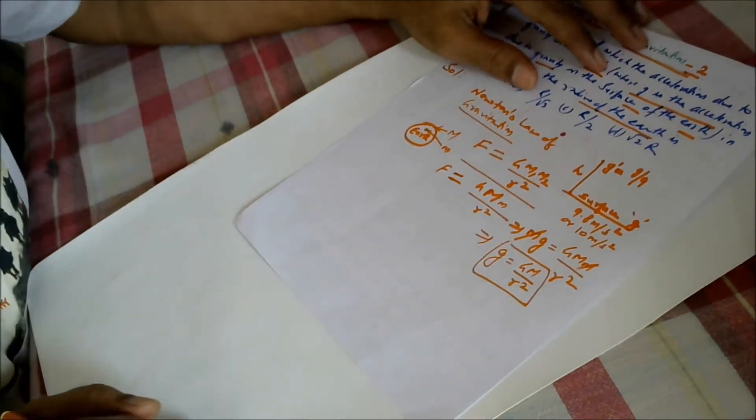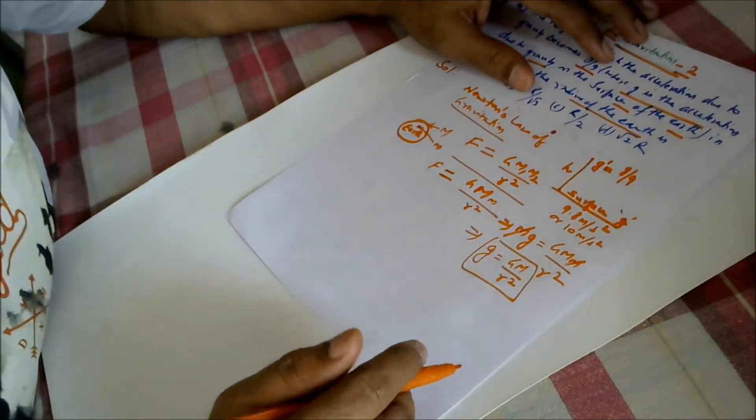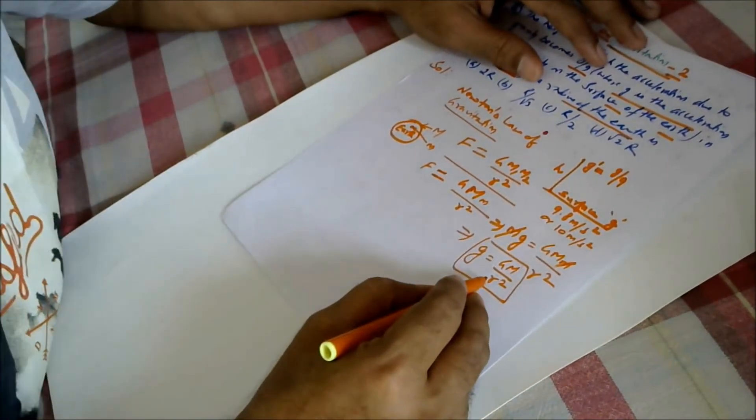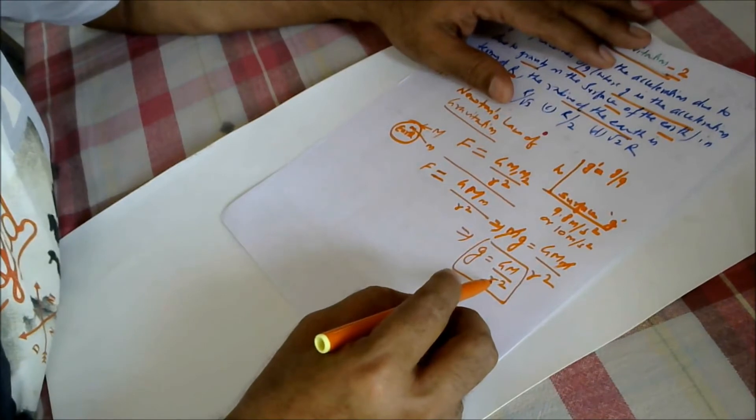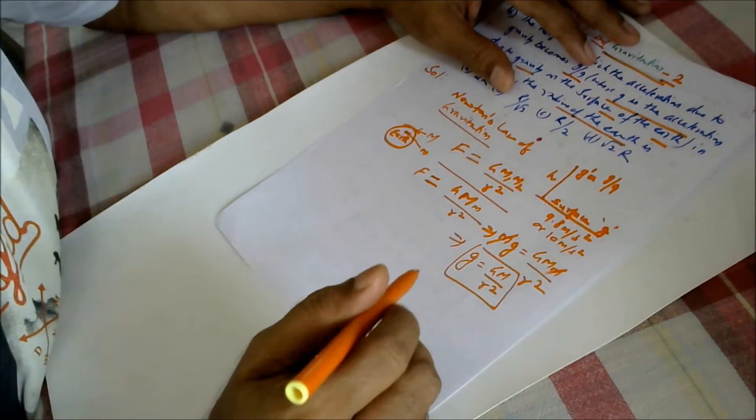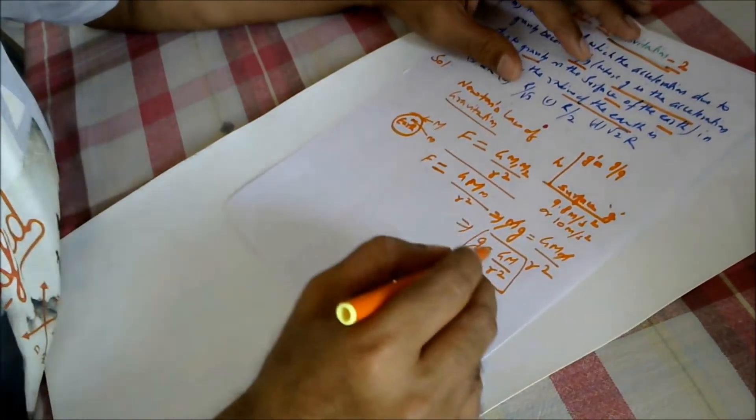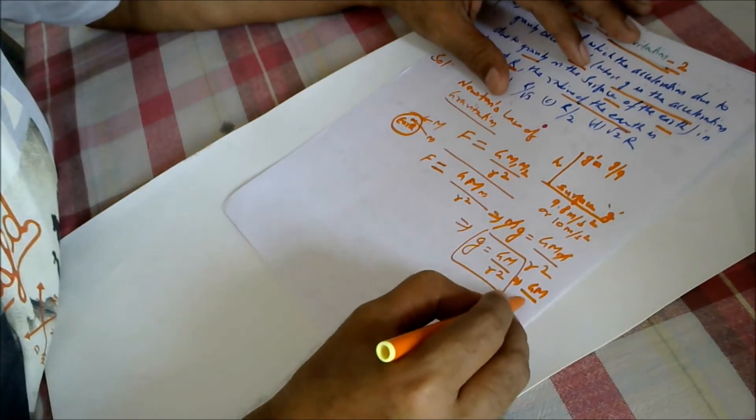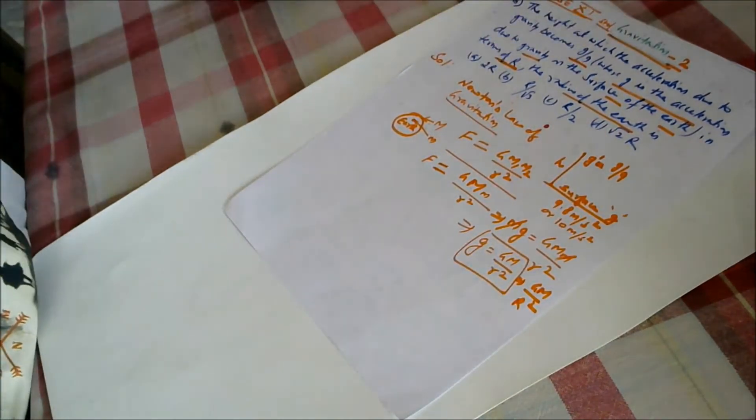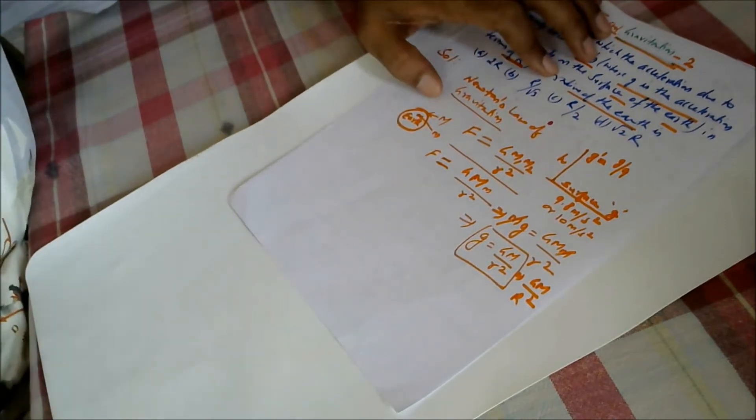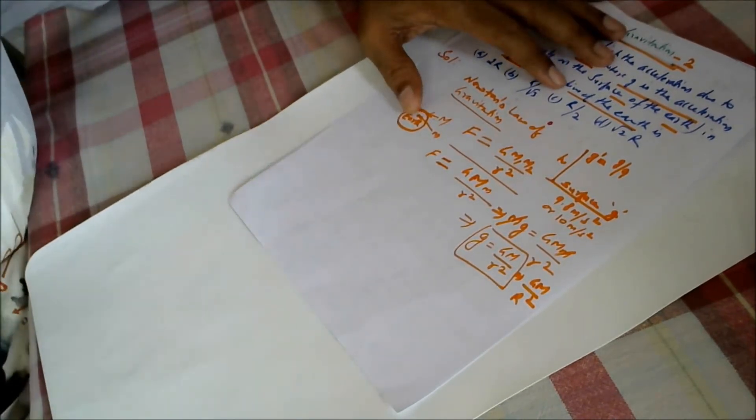And if this r is radius of earth, then this r will become capital R. g equals GM by R square. This can also be written as GM by R square if it is complete radius of earth on the outermost surface of the earth if that object is kept.